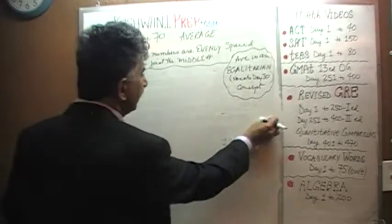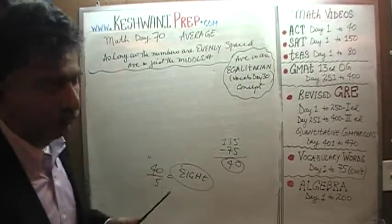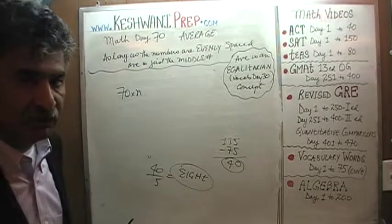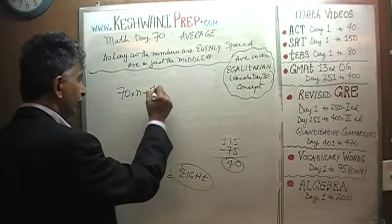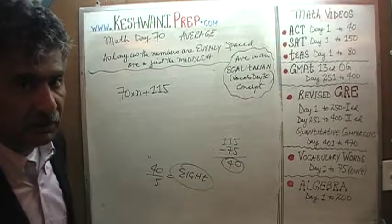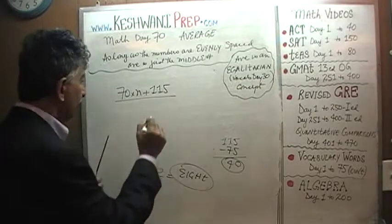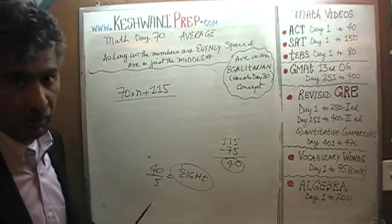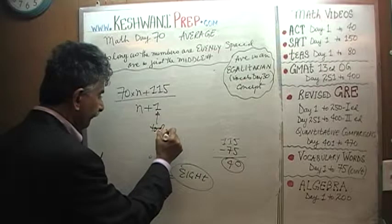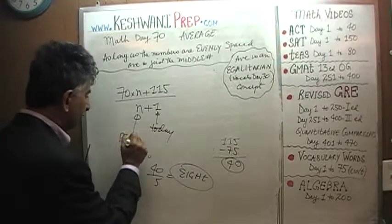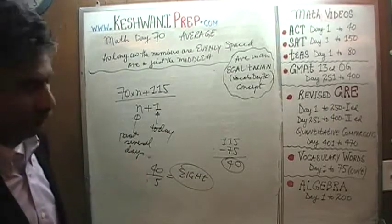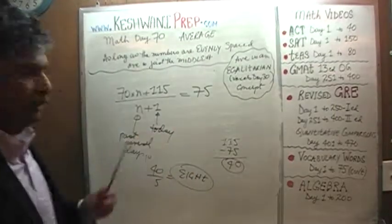So we have a whole bunch of 70s, but we do not know for how many days — that's the whole point. Let's pretend it's n days. So n times 70 would represent the total production over the last few days up until yesterday. Today we produce 115 units. So 70n plus 115 represents the total production over the last few days plus today. If we divide the total production by the number of days, we should have our average. The number of days is n days in the past plus 1 for today. The average has shot up to 75. That's our equation.